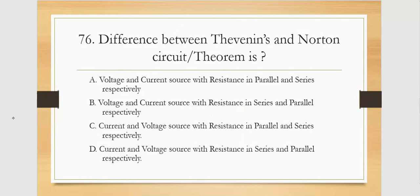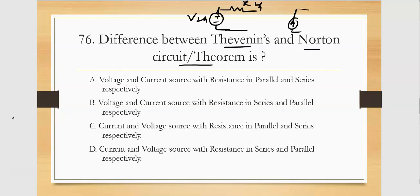The difference between Thevenin and Norton circuit or theorem: Thevenin theorem uses a voltage source with resistance in series — that is VTH and RTH. Norton theorem uses a current source with resistance in parallel — that is IN and RTH. So Thevenin is voltage source in series, Norton is current source in parallel.